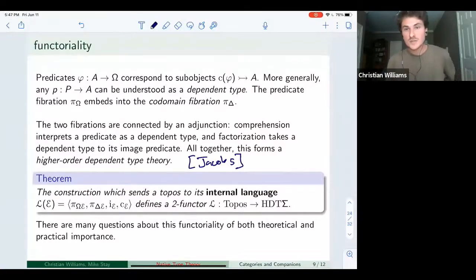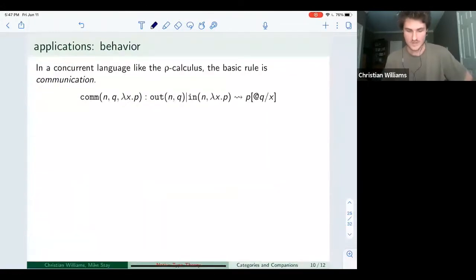This construction that sends a topos to its internal language defines a two functor from toposes to higher order dependent type theories. And what's interesting about this is that a lot of people talk about the fact that toposes have an internal language, but there doesn't seem to be a lot of material about the functoriality of that construction. I'm not sure why. So I think there are actually a lot of interesting open questions about this construction.